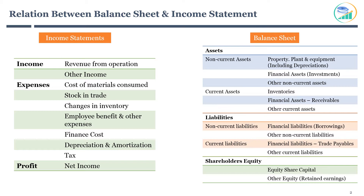Let's begin with revenue from operations. When a company makes a sale of products or services, it receives money. The company can get paid immediately or at a later due date if the sale is done on credit. The income received from the sale of products or services is invested into financial assets.